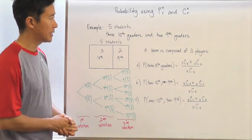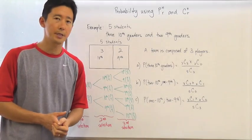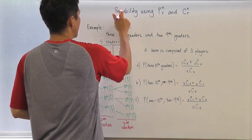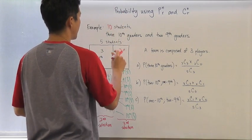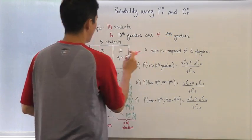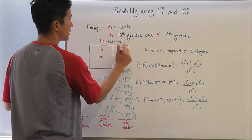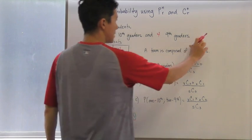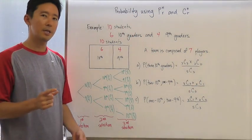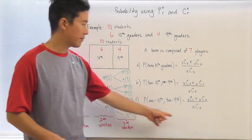Another advantage of using combinatorics to calculate probability becomes clear when we scale up the problem. Imagine if we changed this to 10 students — say six tenth graders and four ninth graders — and the team is composed of seven players. Can you imagine that tree diagram? It would have to have seven different possible selections.